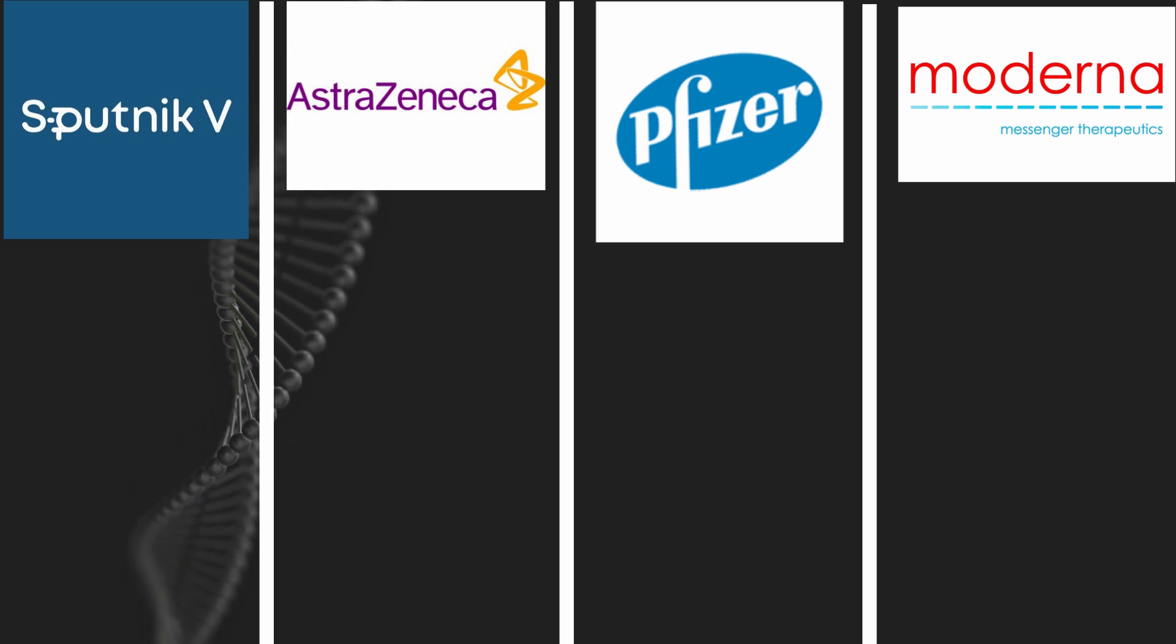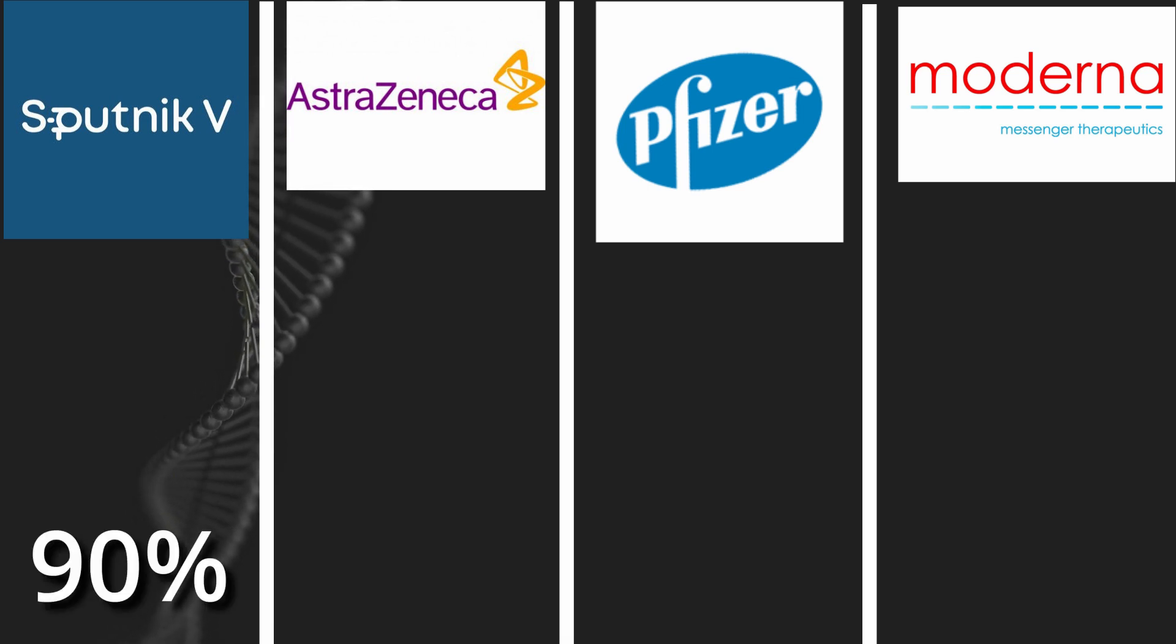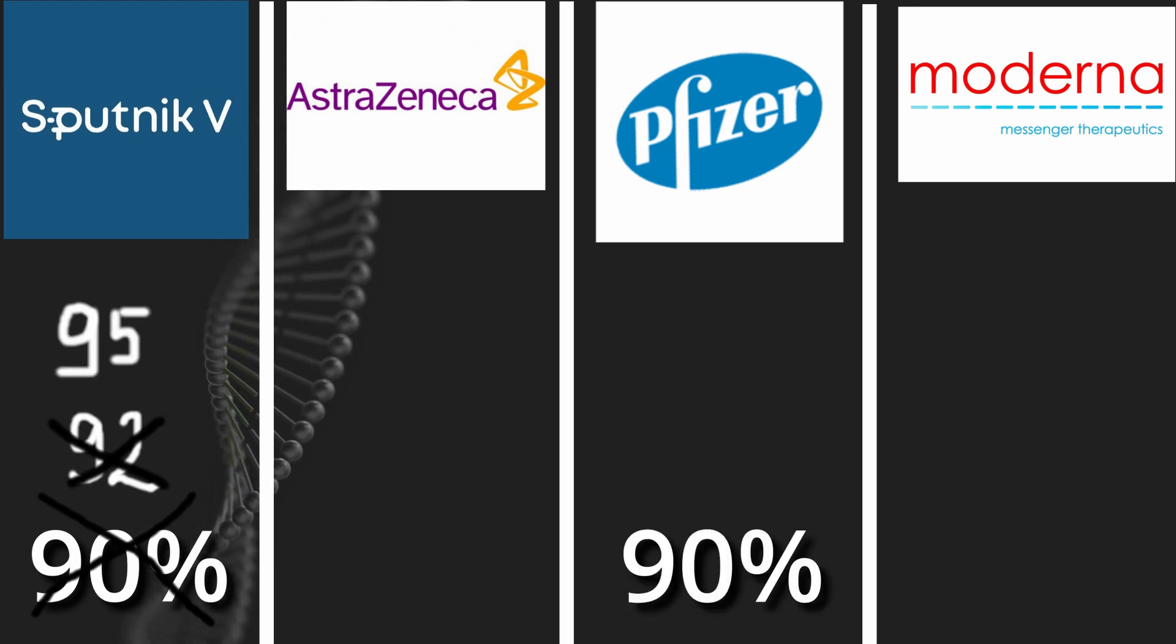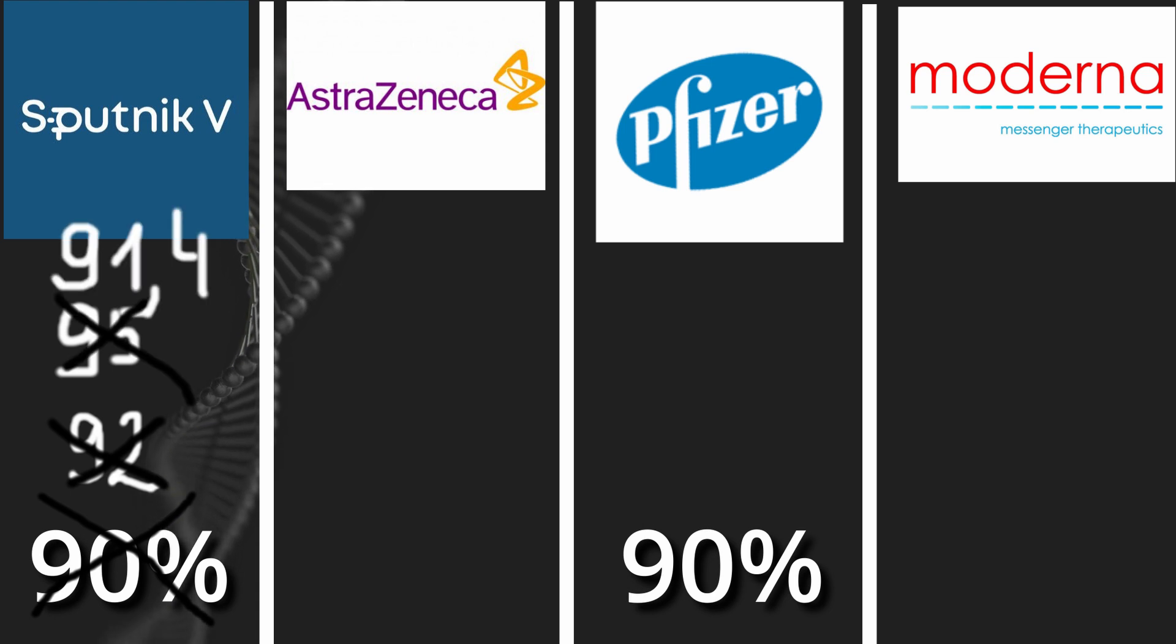There were also several strange increases of the efficiency of the vaccine in various press releases. First it was 90%, then 92% two days later, then it went up to 95% right after Pfizer announced their numbers, and when the hype about the most effective vaccine subsided, it was reduced to its final values of 91.4%. However, foreign counterparts are also guilty of this.